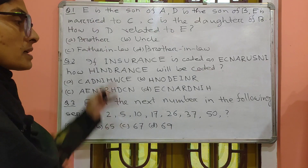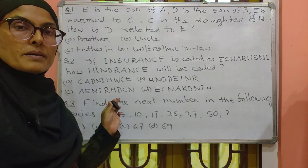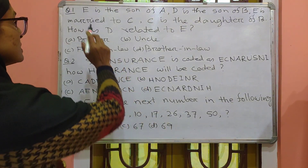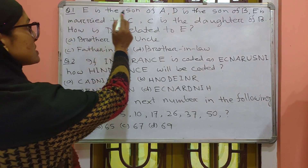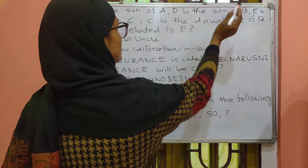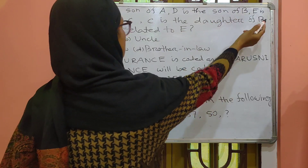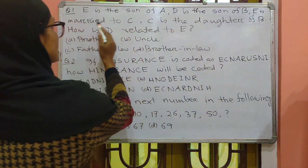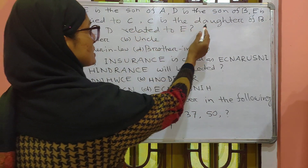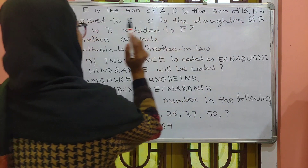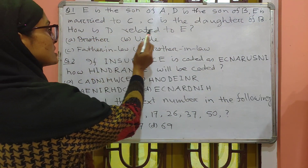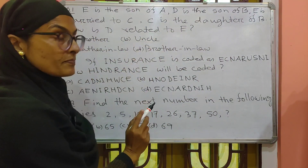There are three questions I have written. Number 1: E is the son of A. D is the son of B. E is married to C. C is the daughter of B. How is D related to E?